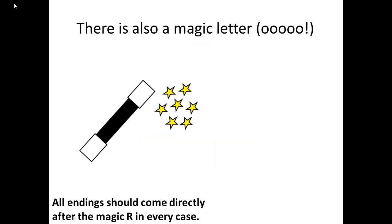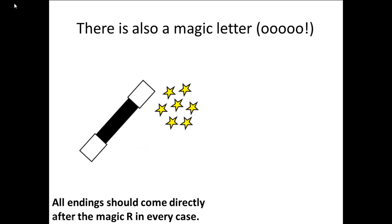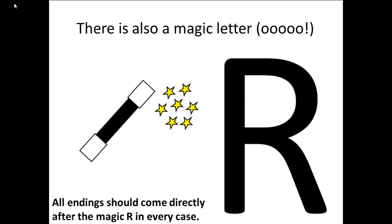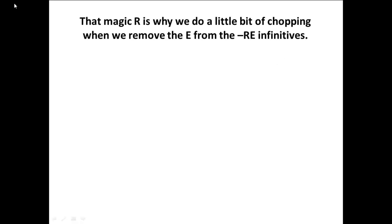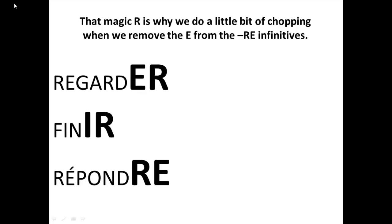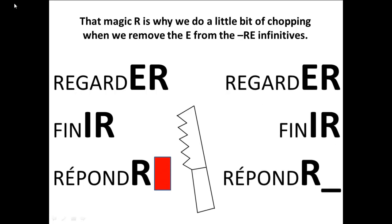There is also a magic letter. All endings should come directly after the magic R in every case. That magic R is why we do a little bit of chopping when we remove the E from the RE infinitives. Here we see the three we have seen in the past: regarder, finir, répondre. We see the familiar chop chop chop, but it is only the E that disappears, leaving us with our three stems.